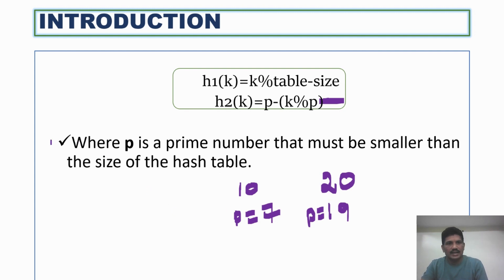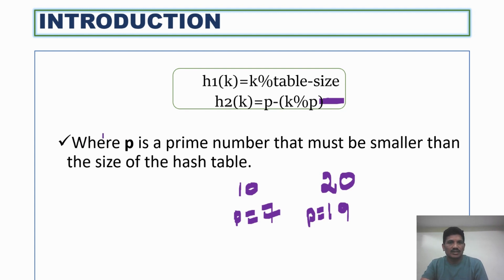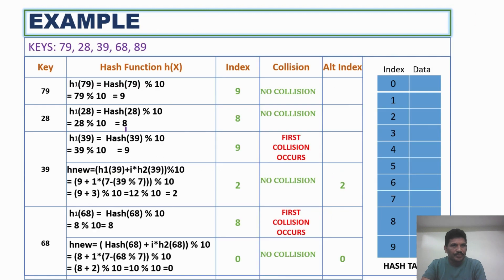In the next slide, I will show you with the help of an example how you can resolve collisions using double-hashing. The keys given as input are: 79, 28, 39, 68, and 89.